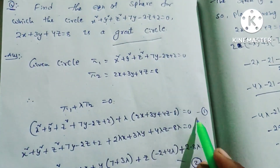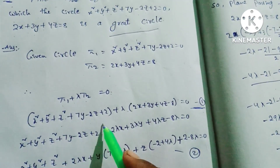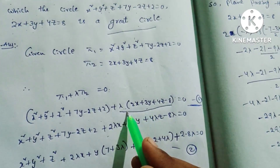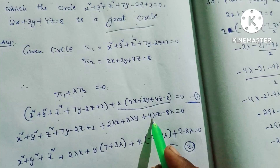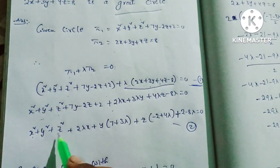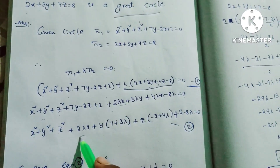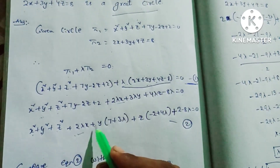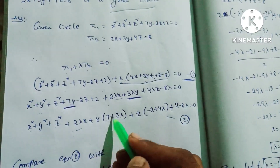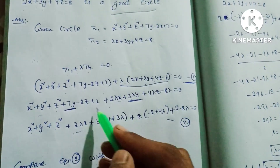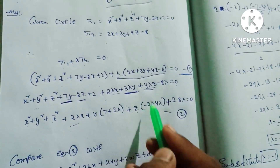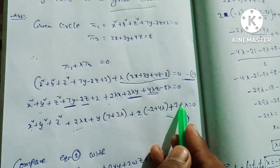The equation of the sphere is: x² + y² + z² + 2λx, plus y is common — here 7y and 3λy, so (7 + 3λ)y — plus z is common — here -2z and +4λz, so (-2 + 4λ)z — plus 2 - 8λ = 0.